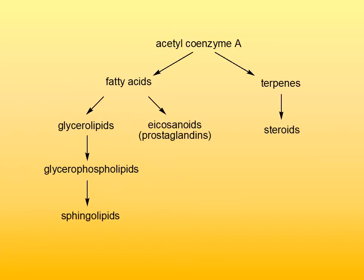What is common to all of these classes of compounds — and actually lipids in general — is that they are synthesized from acetyl coenzyme A. So biosynthesis of all lipids starts with acetyl coenzyme A, and all of the classes of compounds listed are shown with their pathway from acetyl coenzyme A.